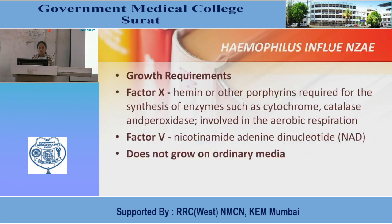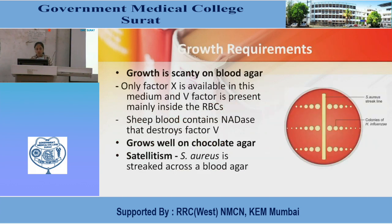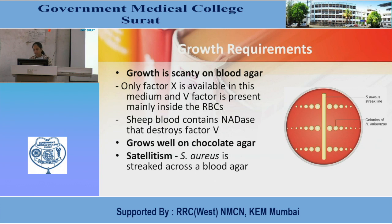Haemophilus influenzae growth requirements are factor V and factor X. Factor X (hemin or other porphyrin enzymes such as cytochrome, catalase, and peroxidase) is involved in aerobic respiration. Factor V (NAD — nicotinamide adenine dinucleotide) — does not grow on ordinary media. Growth is scanty on blood agar as only factor X is available; factor V is present mainly inside erythrocytes. Sheep blood contains NADase that destroys factor V. Growth is good on chocolate agar. Satellitism occurs when S. aureus is streaked across blood agar — H. influenzae grows well near the streak line.